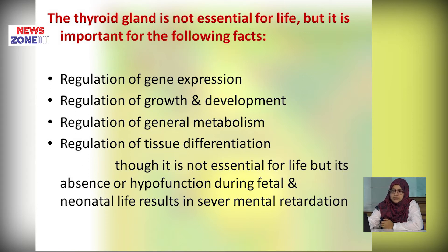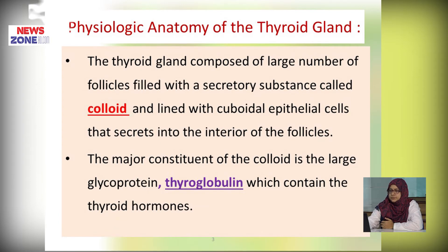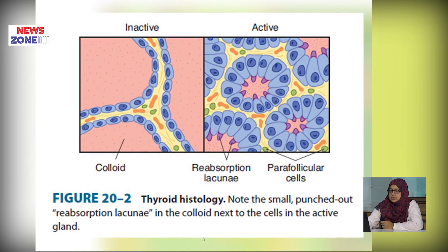Though it is not essential for life, its absence or hypofunctioning during fetal life and neonatal life results in severe mental retardation. The thyroid gland is composed of a large number of follicles filled with a secretory substance called colloid, lined with cuboidal epithelial cells that secrete into the interior of the follicles. The major constituent of the colloid is thyroglobulin, a globulin protein that contains the thyroid hormone. There are about 20 to 40 follicles dispersed in each thyroid gland. In the active stage, cells become columnar, while in the inactive stage, cells are lined with cuboidal cells.